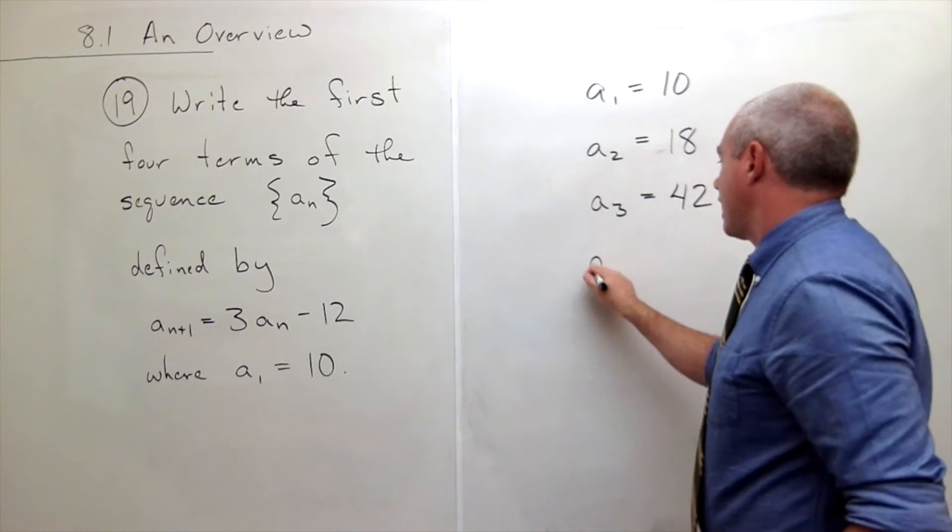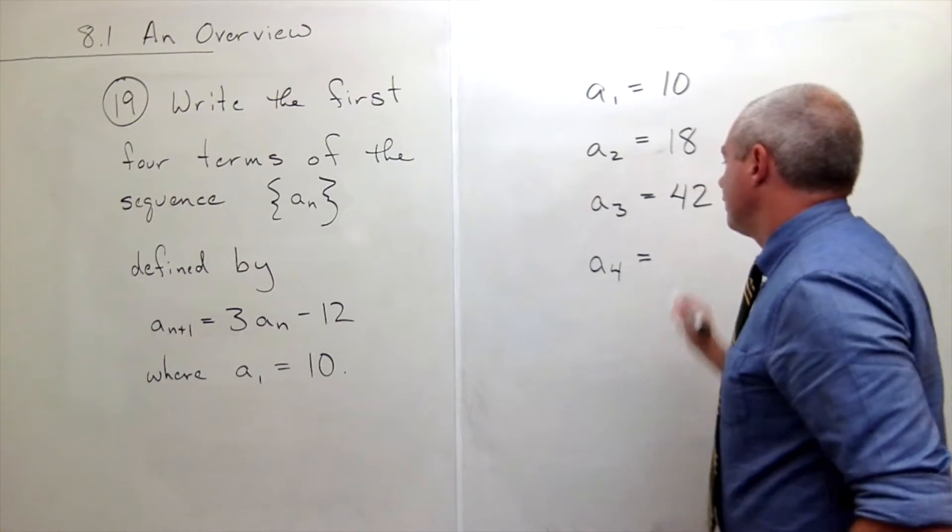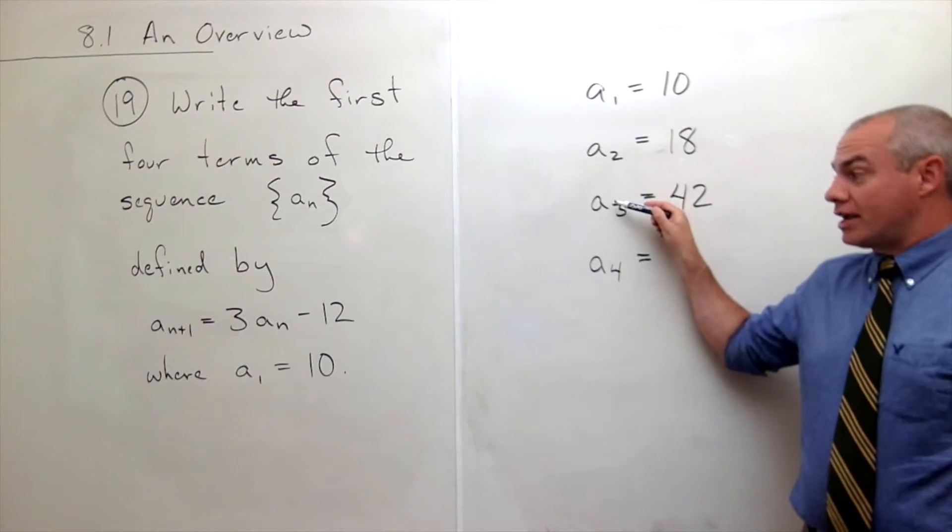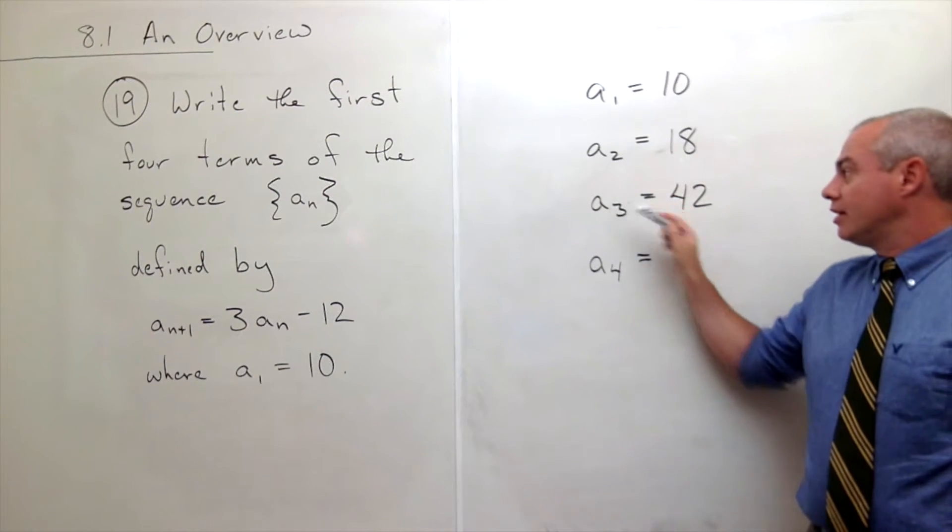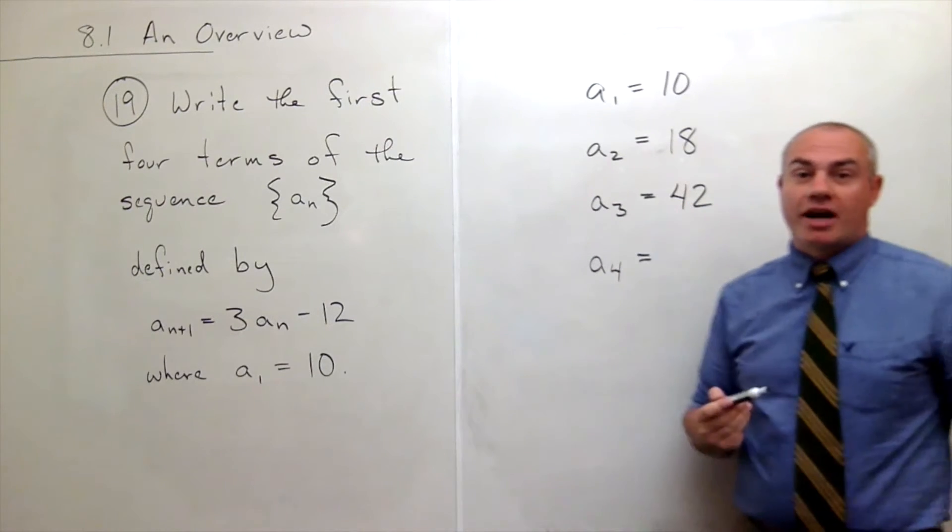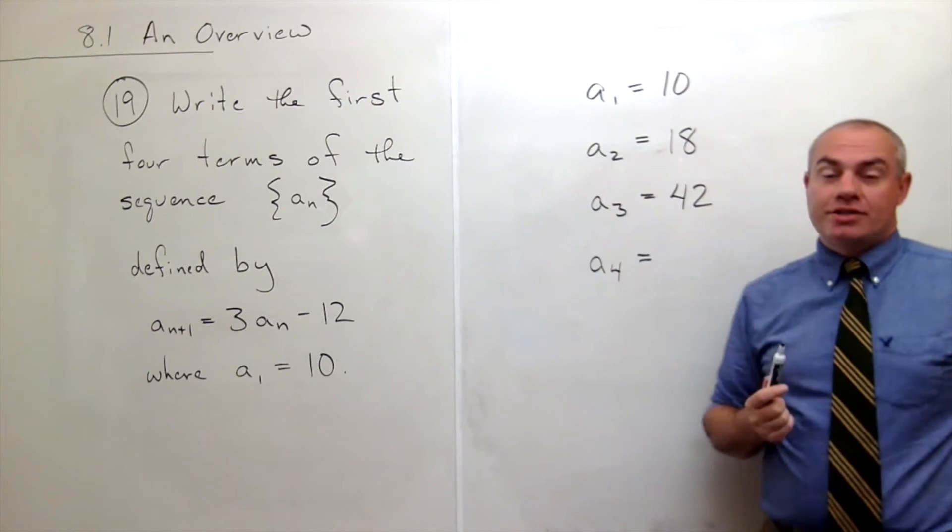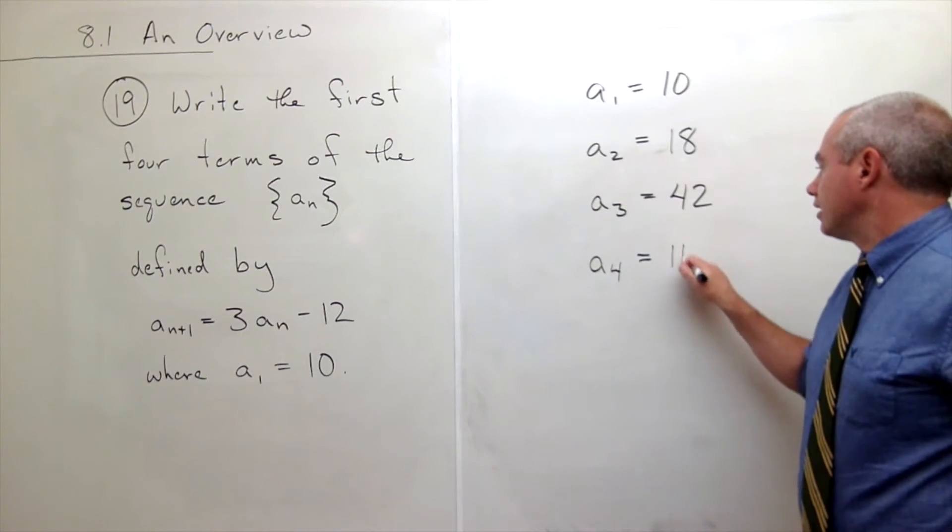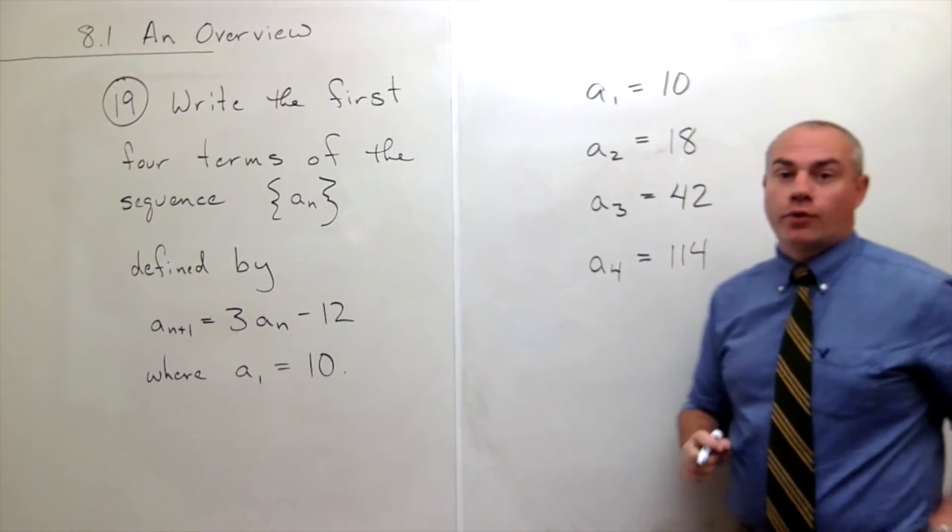And finally if I want to get a sub 4, then I want to do the exact same thing again. Take a₃, the guy before him, multiply him by 3 and subtract 12. So 42 times 3 is 126, subtract 12 would be 114.